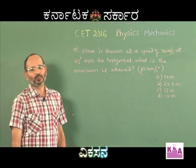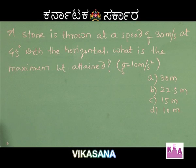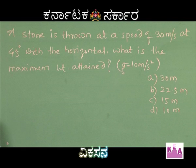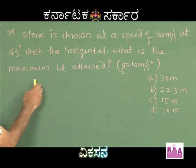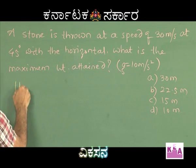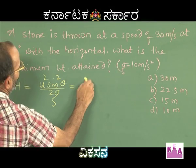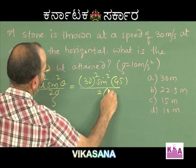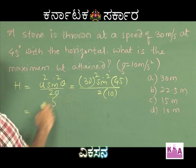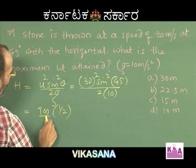We will take one very simple problem on projectile motion — it is just a substitution type of problem where if you know the formula you can substitute the given data and get the answer. A stone is thrown at a speed of 30 meters per second at an angle of 45 degrees with the horizontal. What is the maximum height attained? The formula for maximum height is h equals u squared sin squared theta divided by 2g, which equals 30 squared times sin squared 45 divided by 2 times 10.